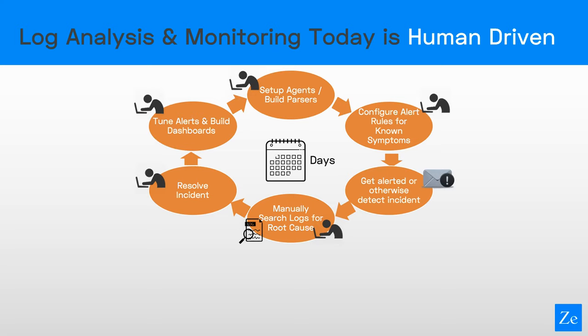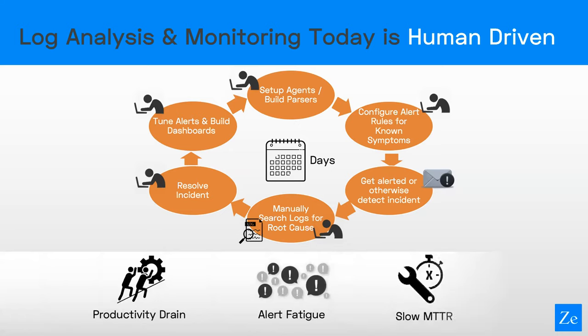Once you find the root cause, you can manually go and resolve it, then you're back into the workflow of tuning alerts and building more dashboards. There are a lot of manual steps, which leads to a real productivity drain for your team, alert fatigue because you're constantly maintaining and tuning alerts as your environment changes, and ultimately the biggest impact: slow mean time to resolution. If your team is having to manually search through lots of logs to find out what's going on, your users are being impacted throughout that incident.